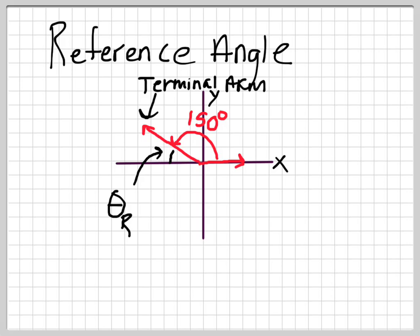Basically, the entire way is 180, and my angle is 150, so how much is left over? It's just 180 subtract 150, which is 30 degrees. So that is my reference angle.